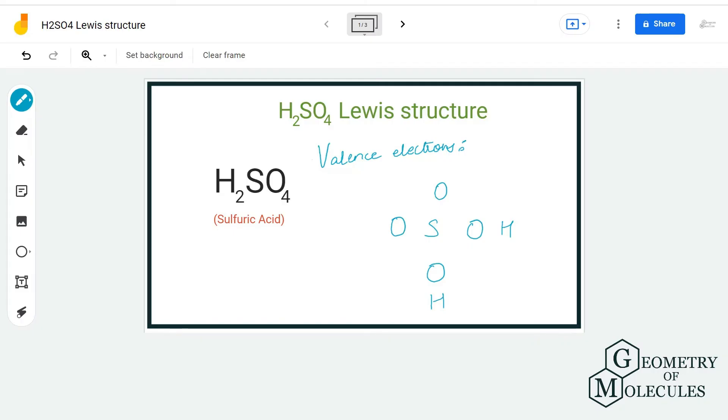Hi guys, welcome back to our channel. In today's video, we are going to help you find out the Lewis structure for H2SO4 molecule. It is the chemical formula for sulfuric acid, and to determine its Lewis structure, we will first look at the total number of valence electrons.